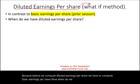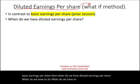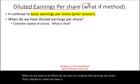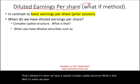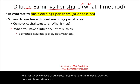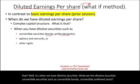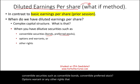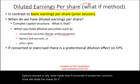When do we have diluted earnings per share? When do we have to compute this earnings per share that's diluted? It's when we have a complex capital structure. What is that? It's when we have dilutive securities. What are dilutive securities? Convertible securities such as convertible bonds, convertible preferred stock, options, warrants, or any other rights that, if converted into common stock, will dilute the shares. So if converted or exercised, there is a potential dilution effect.